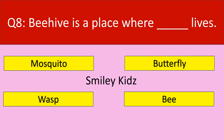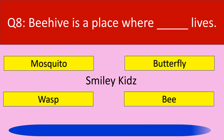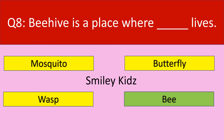Question number 8. Beehive is a place where blank lives. Options are mosquito, butterfly, wasp, and bee. Your time starts now. The correct answer is bee. Beehive is a place where bees live.